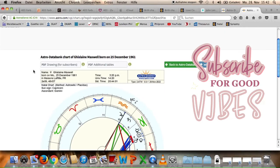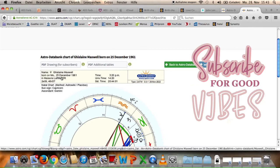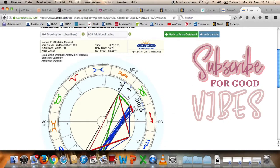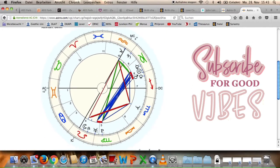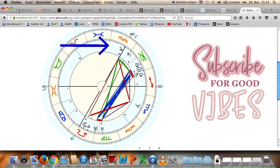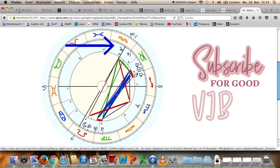This is Ghislaine Maxwell's birth chart. She was born on December 25th, 1961 in France. I think she is British, or her family is British. And that's why I want to start with her family. We do see the North Node down here in Leo, which means the South Node would be the opposite. It would be in Aquarius in the 10th house.